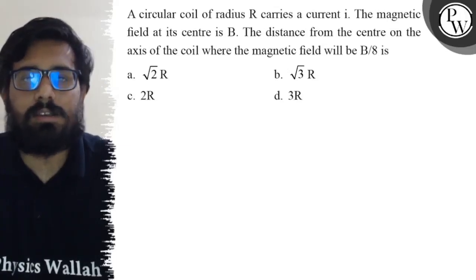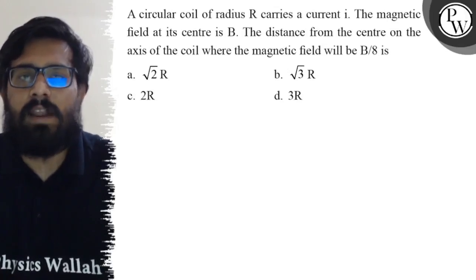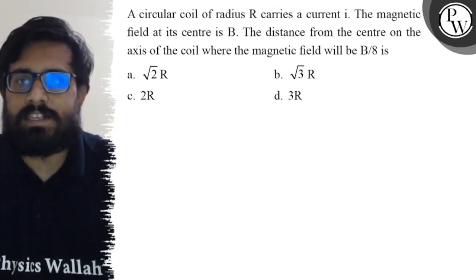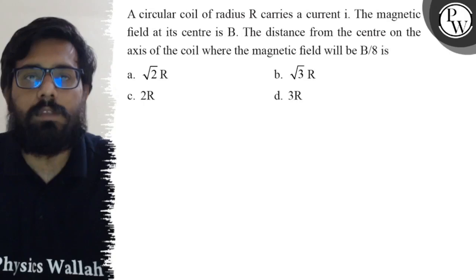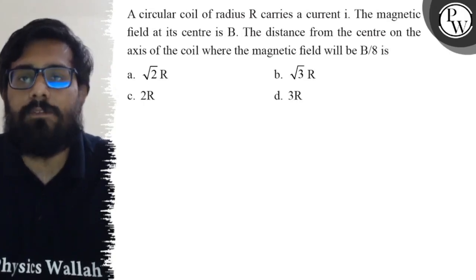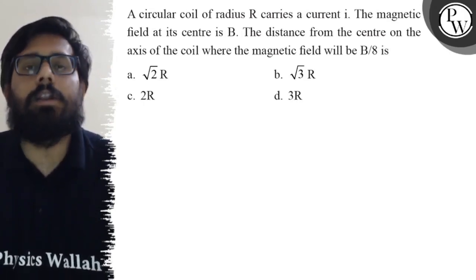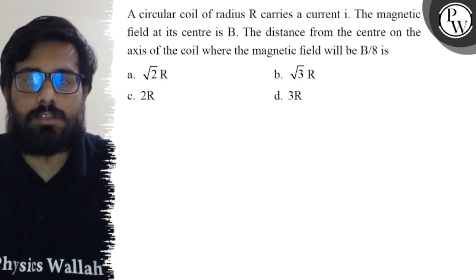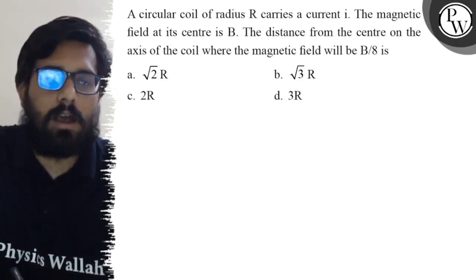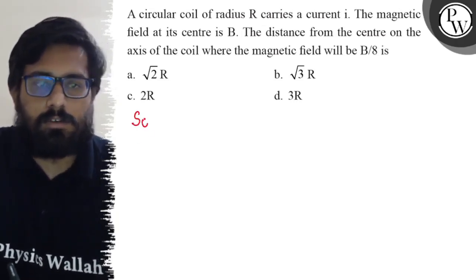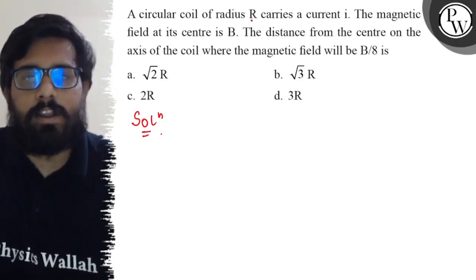Hello, let's see the question. A circular coil of radius R carries a current i. The magnetic field at its center is B. The distance from the center on the axis of the coil where the magnetic field will be B by 8 is: first option is √2R, second option is √3R, third option is 2R, and the fourth option is 3R.